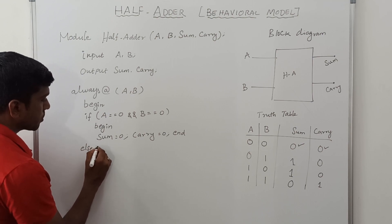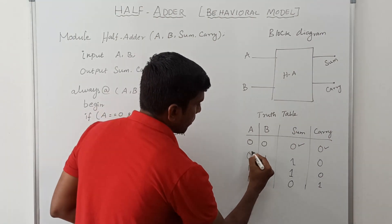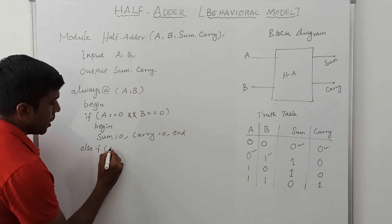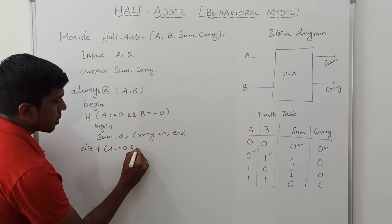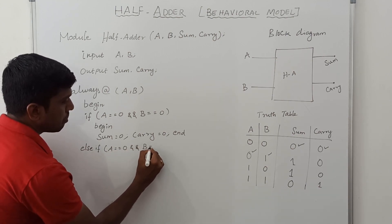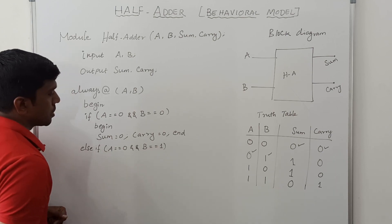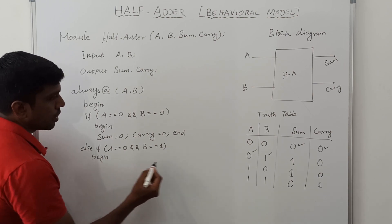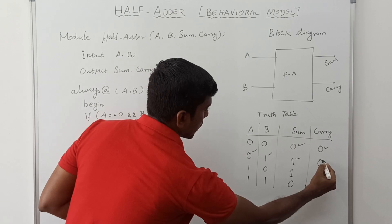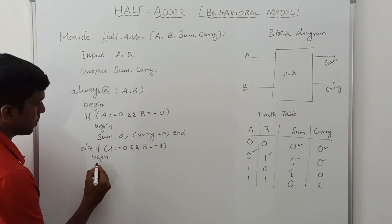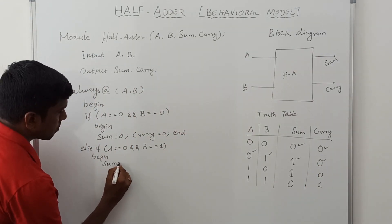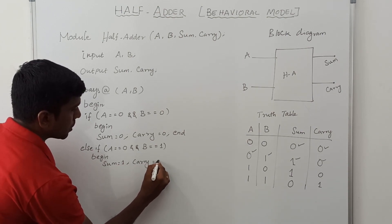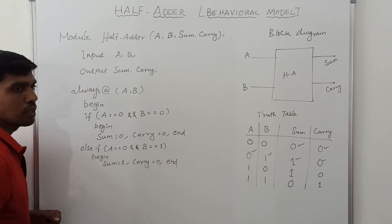Then go to the next one. Else if: the second input — A equals 0 and B equals 1. Begin the else-if loop: sum equals 1, carry equals 0. End the loop.